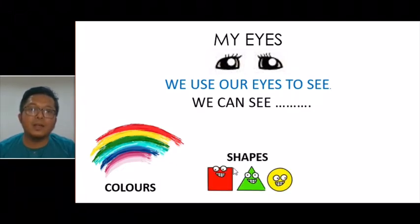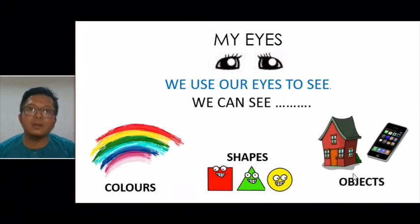My eyes. What can you use with your eyes? We use our eyes to see. We can see what? What can you see? We can see colors. Yes. There are colors of rainbow here. Seven colors of rainbows. Can you name the colors of rainbows? Next. We can see shape. What shape is this? How about this one? What shape is this? How about the third one? What shape is this? Next. We can see things. We can see objects. We can see a house. We can use our eyes to see a phone, your laptop, your television, and many more.